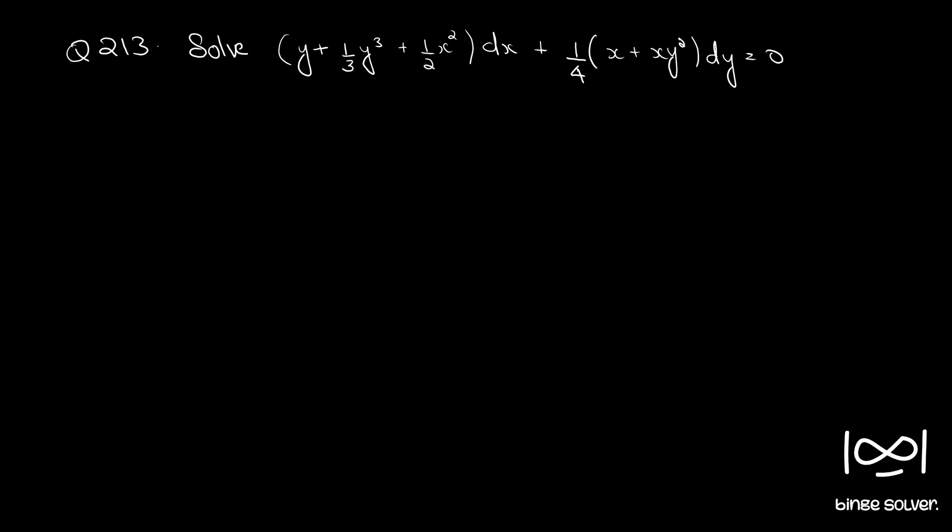Question number 2, 1, 3. Solve: (y + y³/3 + x²/2) dx + (1/4)(x + xy²) dy = 0.